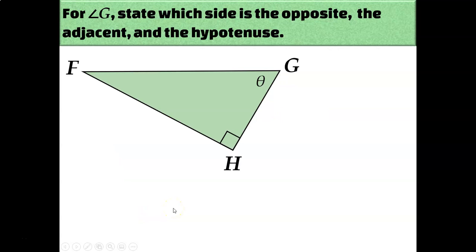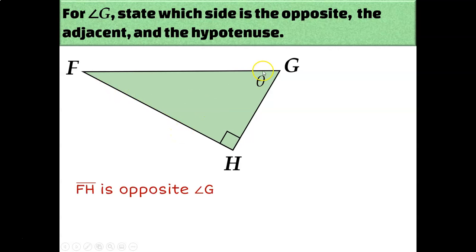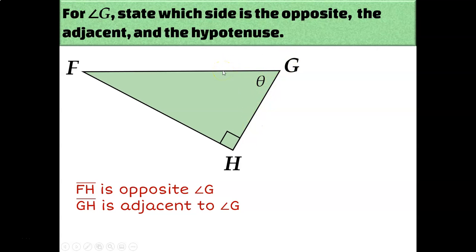Try this third example on your own. Pause the video and identify which sides are opposite, adjacent, and hypotenuse. In relationship to angle G, labeled with theta: FH is the opposite because it's on the other side of the triangle from theta. GH is the adjacent side because it's attached to and creates angle theta. FG is the hypotenuse because it's across the right triangle from the right angle.